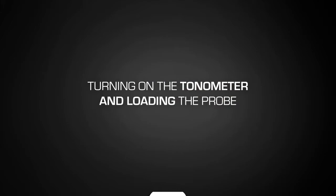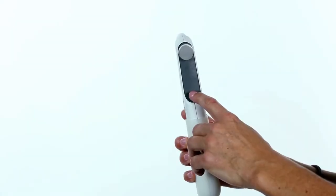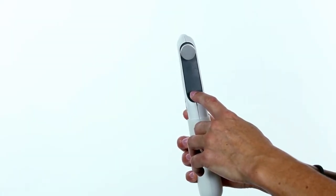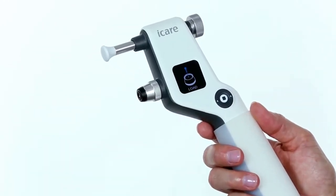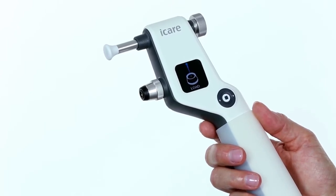Turning on the tonometer and loading the probe. To turn on the tonometer, press and hold the measure button for three seconds or until you hear a beep. Load the probe into the tonometer when the display screen shows Load Probe.